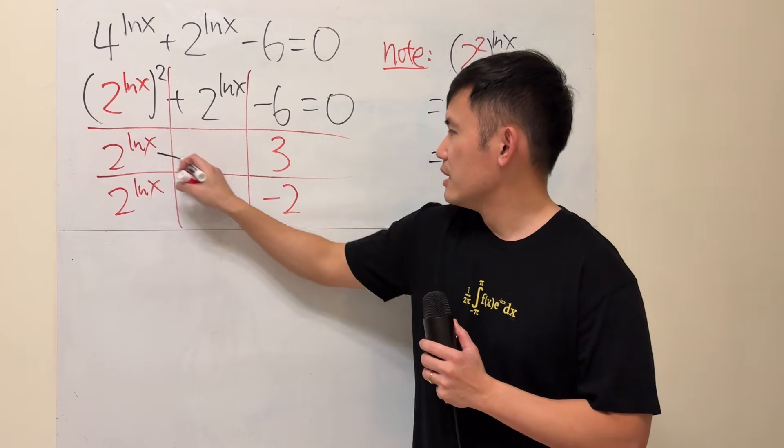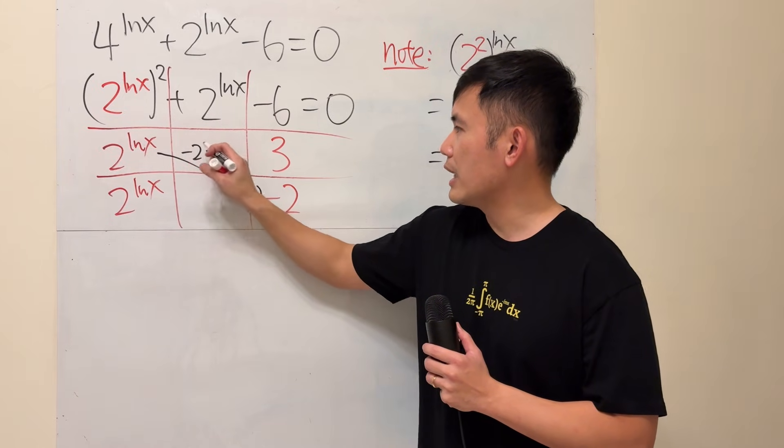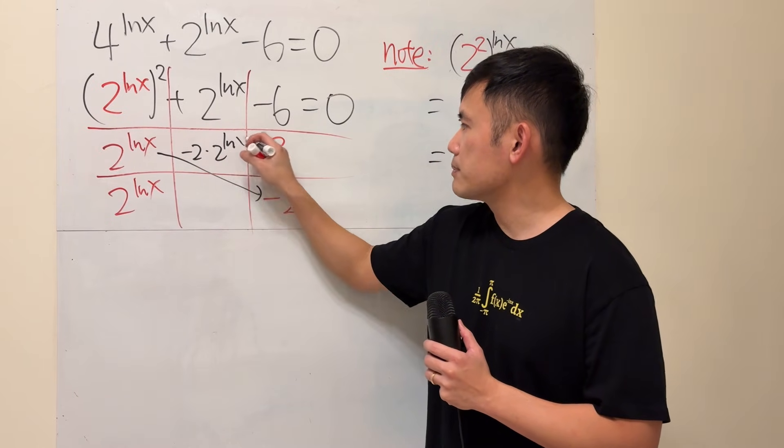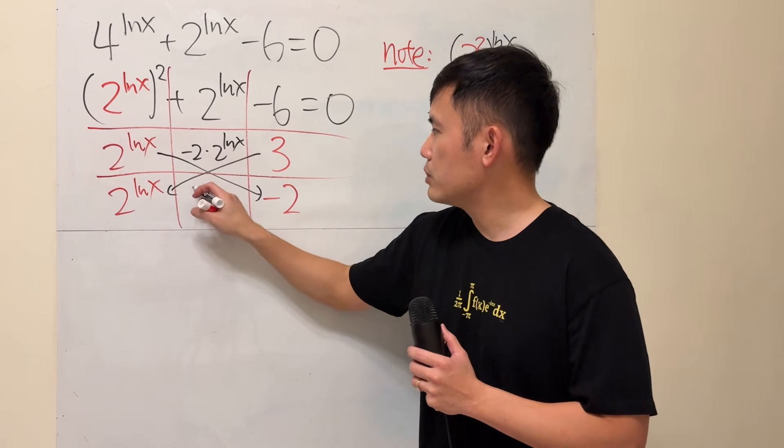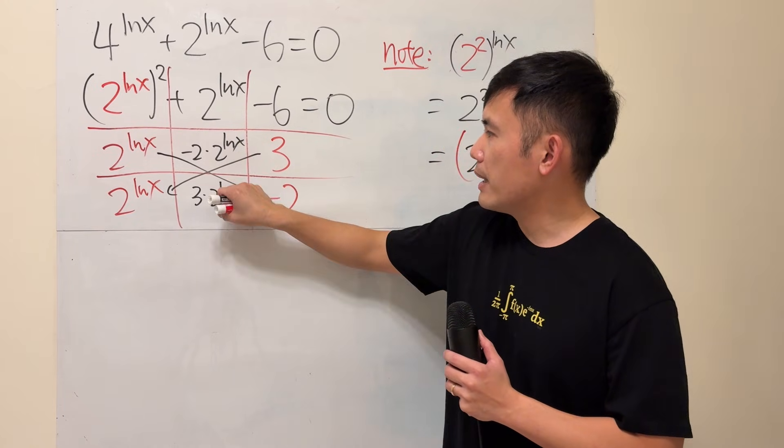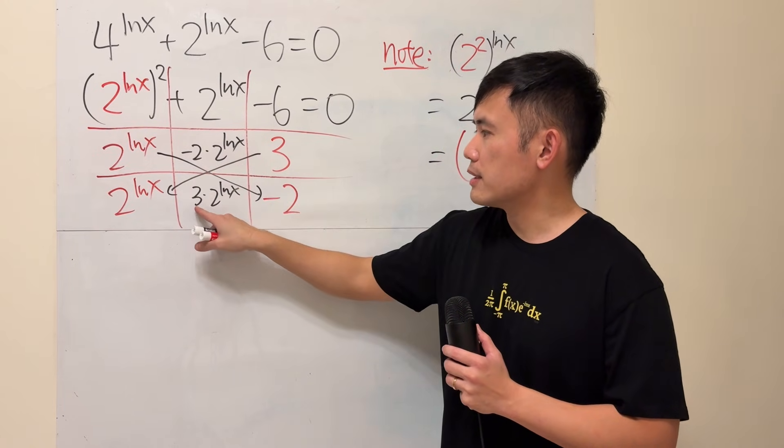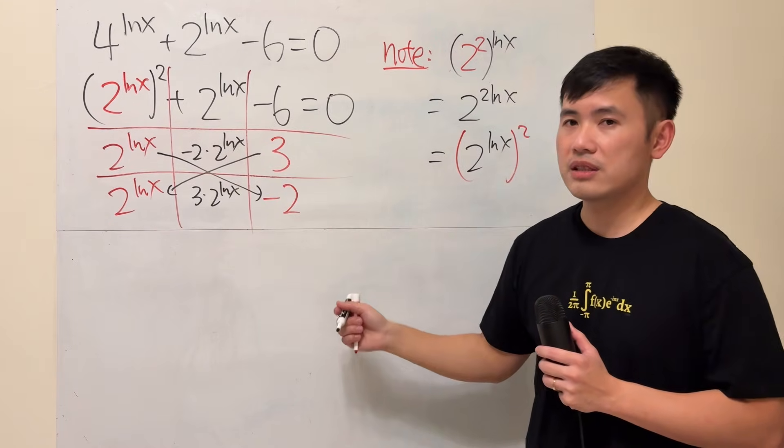Okay, check. This times this, we get negative 2 times 2 to the ln x power. And then this times that, we get 3 times 2 to the ln x power. Combine like terms, negative 2 plus 3 is just positive 1, so this right here checks.